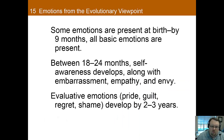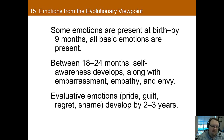When do these emotions develop? We know that some are present at birth. At birth, we have three main emotions: interest, contentment, and distress. After three months, we add on more emotions — excitement, joy, happiness, sadness, and disgust.